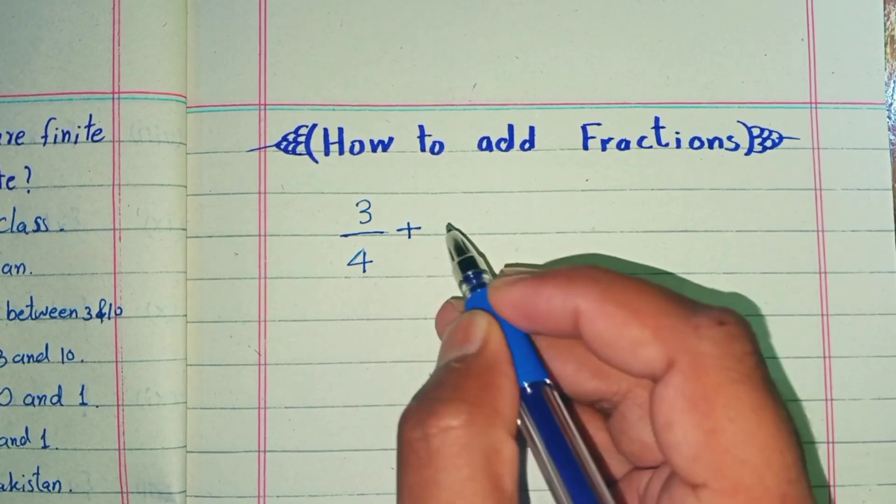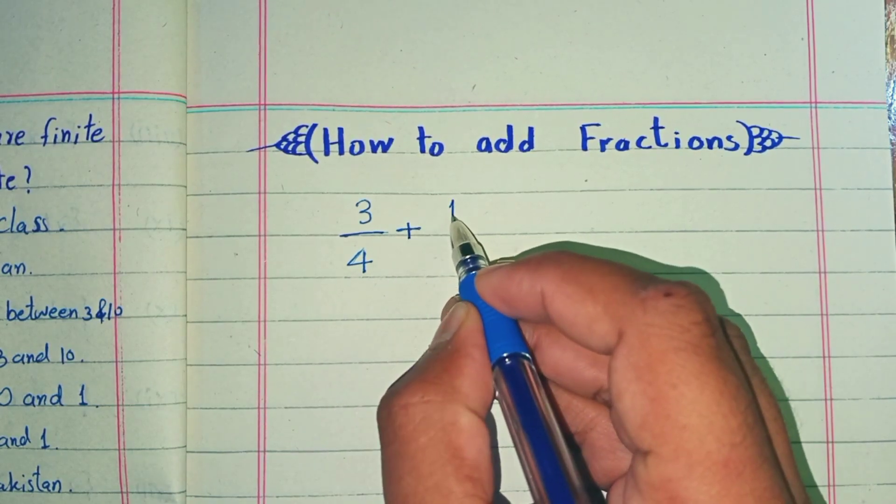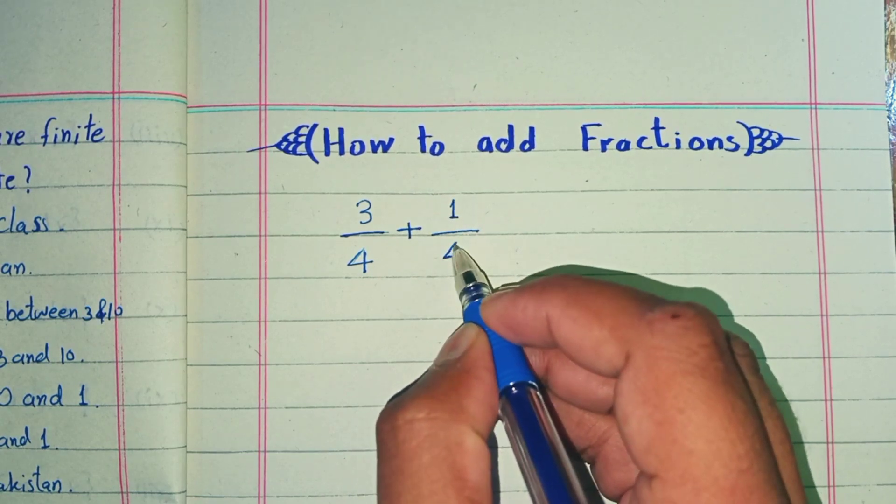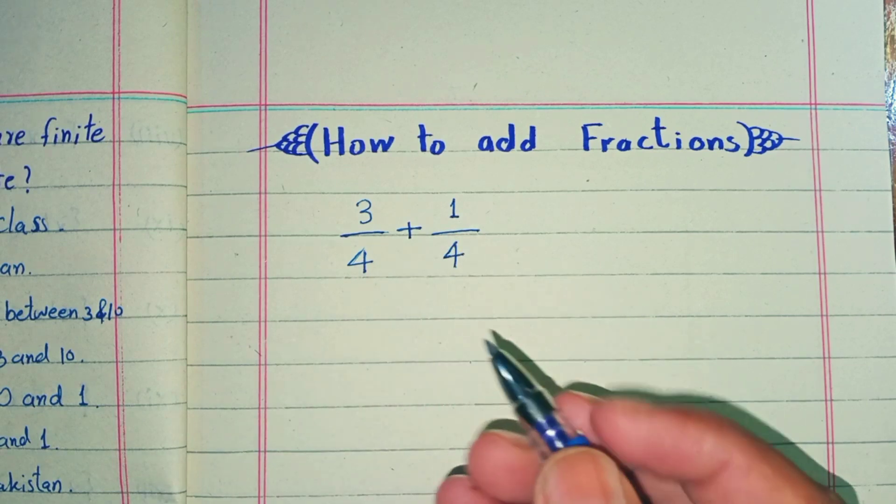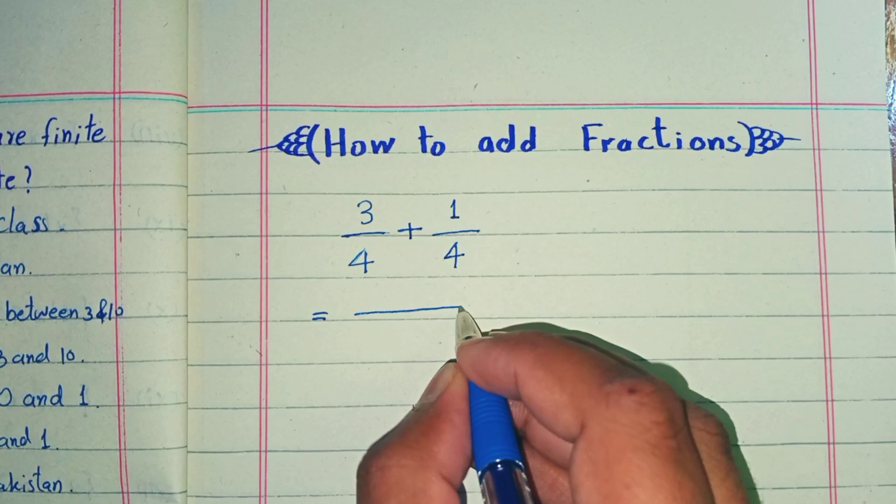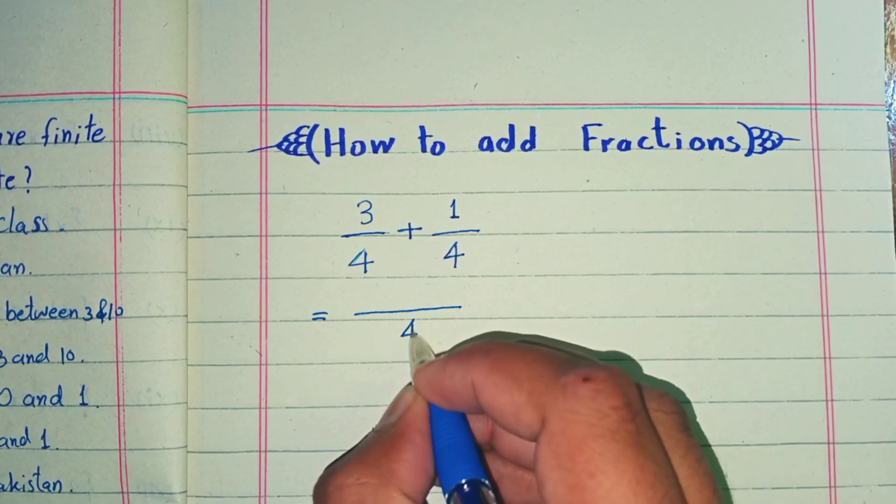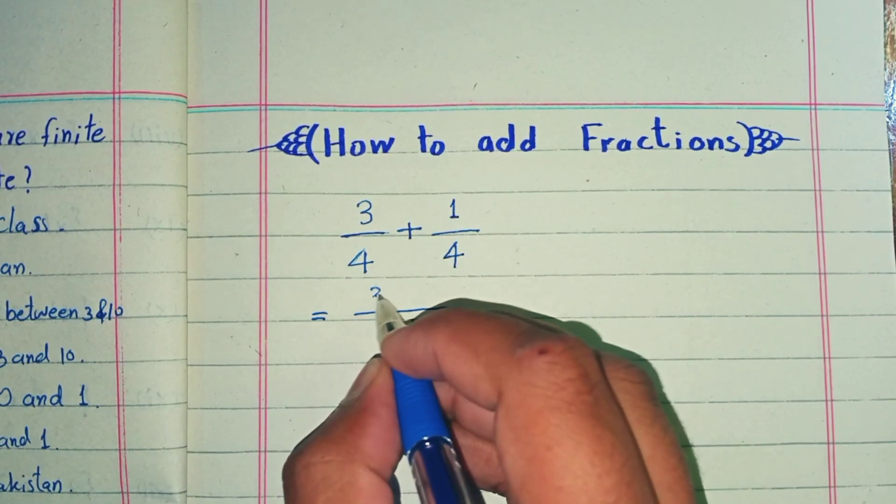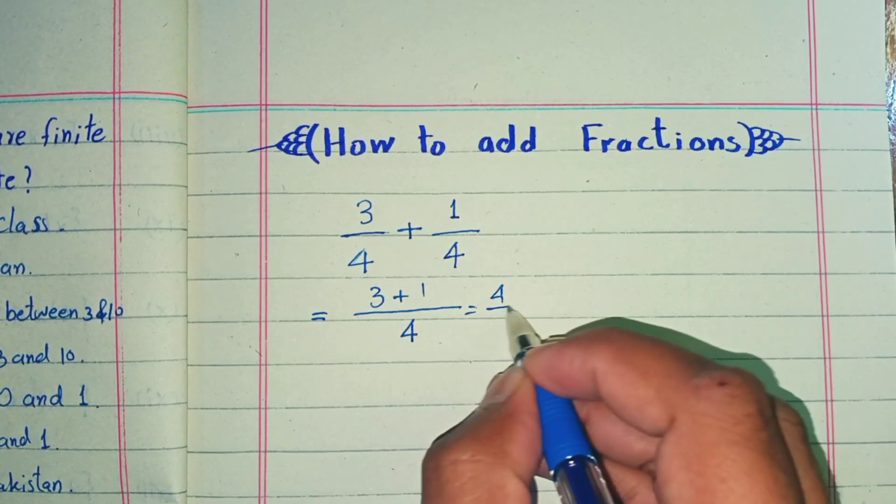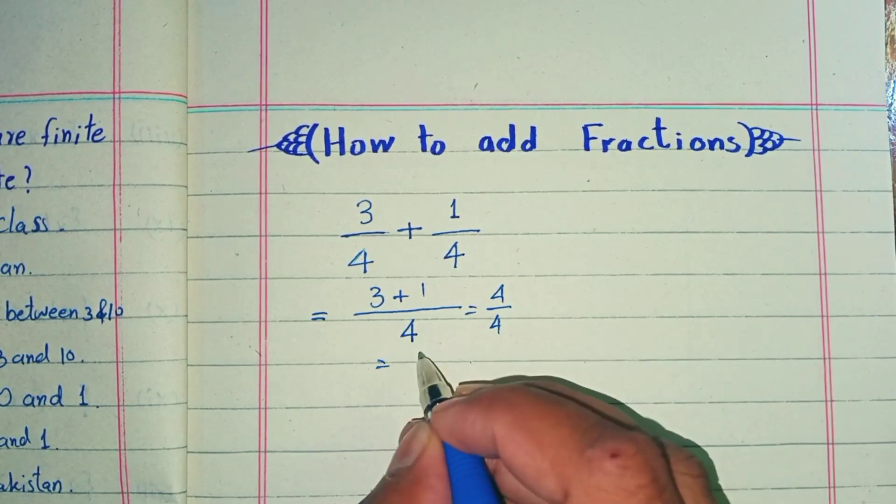When we have the same denominator, as you can see here, 3/4 and 1/4, you can simply add these by writing the same denominator as 4 and adding the numerators: 3 plus 1. So we get 4/4, which equals 1. This is a very simple case for adding fractions.